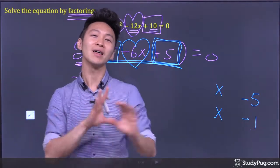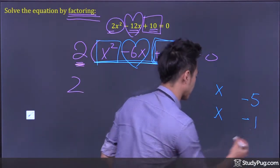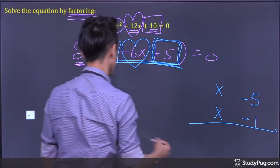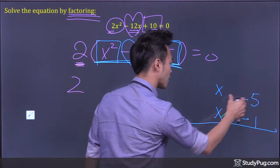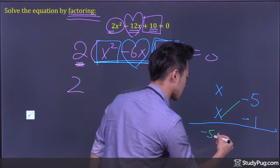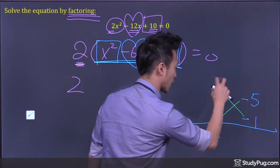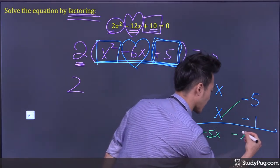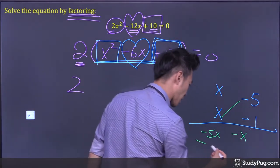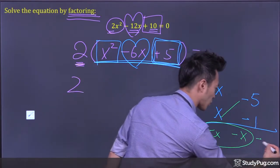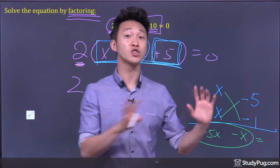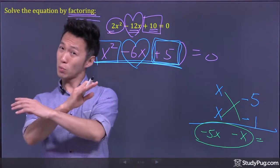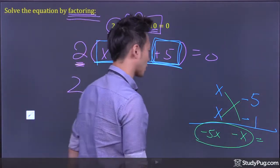So now let's do cross multiply, then check. Cross multiply this way, -5 times x gives -5x. Cross multiply this way, x times -1 gives -x. After cross multiply, we've got to check. That's why the technique is called cross multiply, then check.